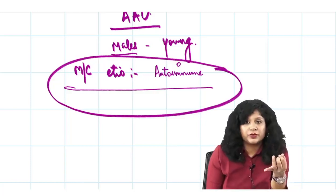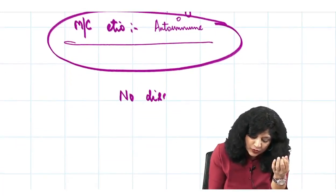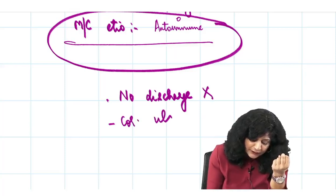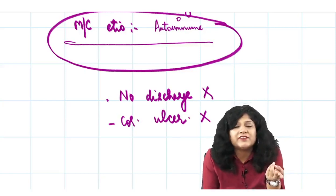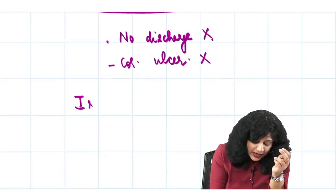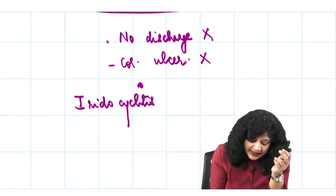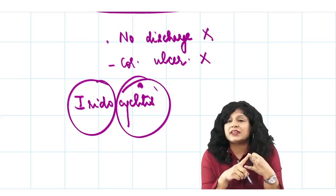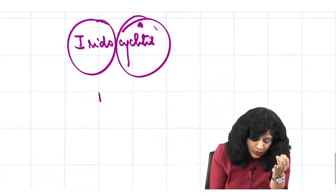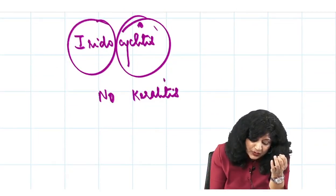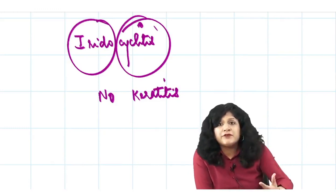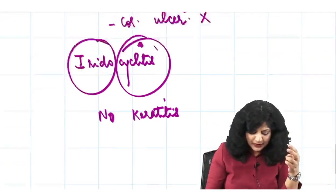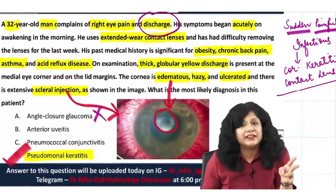The most common etiology of anterior uveitis is autoimmune, so I would not get any discharge. Also, there should be no corneal ulcer in a straightforward case of acute anterior uveitis. What you get is iridocyclitis — iritis and cyclitis — not keratitis. Unless a secondary infection by a very virulent bacteria has led to conjunctivitis and corneal ulcer, which would be a far-away story, it is very unlikely this patient has anterior uveitis.